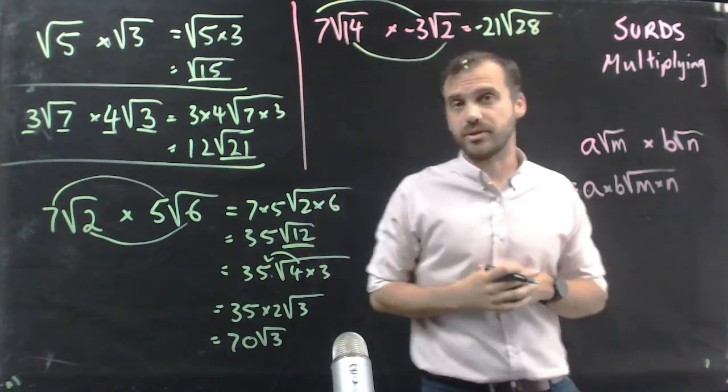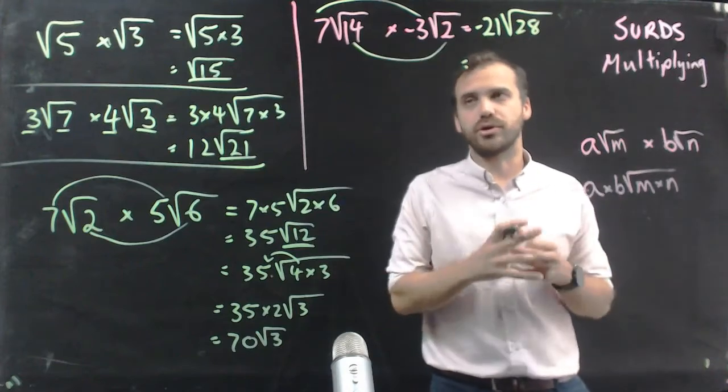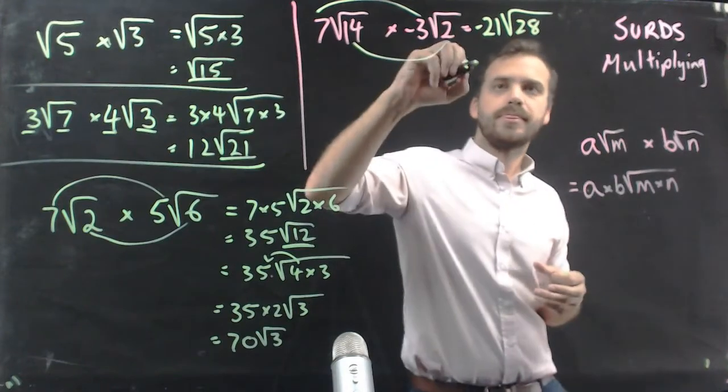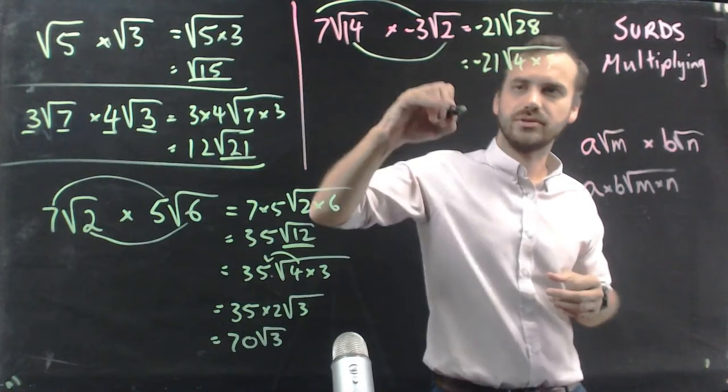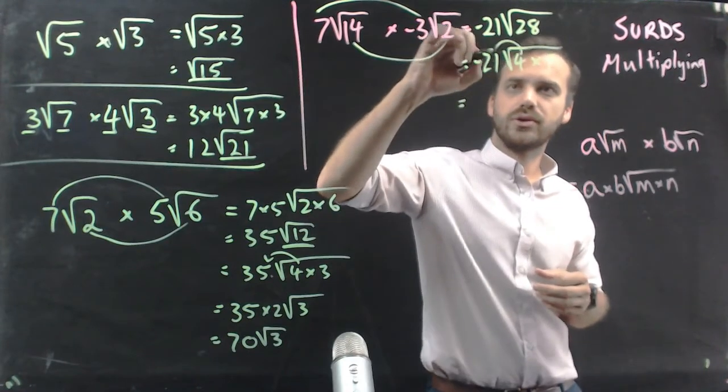And then you stop and think, can 28 be broken up further? Negative 21. 4 times 7. Looks like it can. The 4 comes outside.